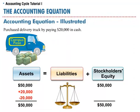Campus Pizza purchased a delivery truck by paying $20,000 in cash. The company's assets would increase by $20,000 due to the value of the truck, and would also decrease by $20,000 due to the use of cash. The equation would stay in balance.